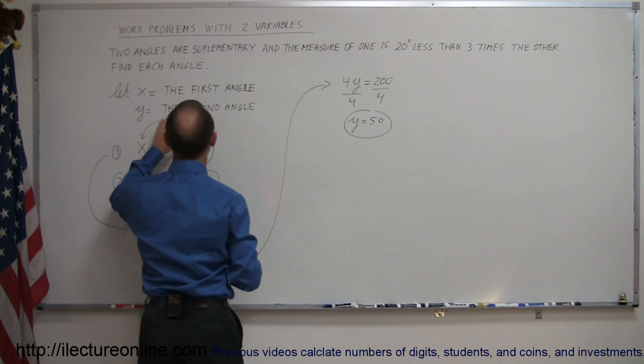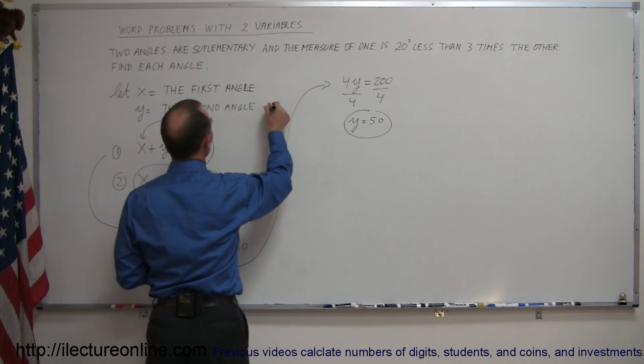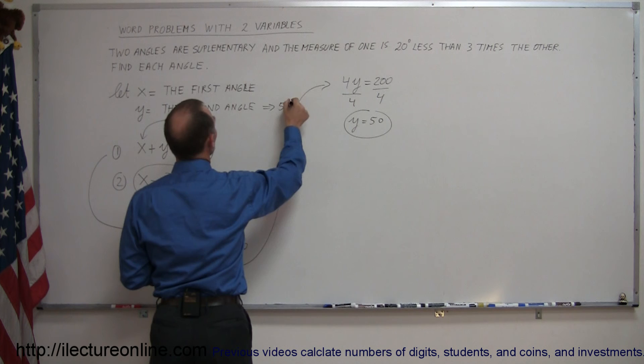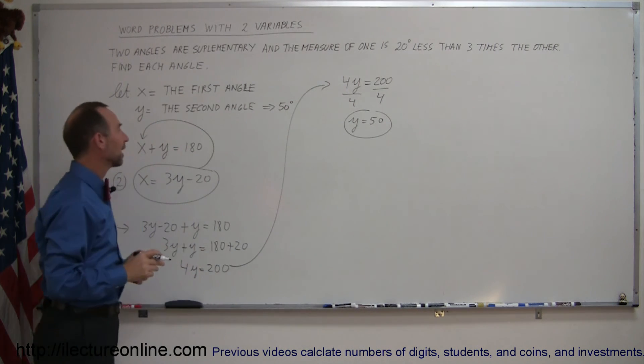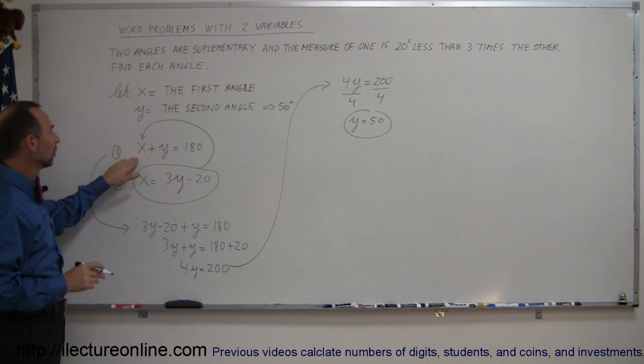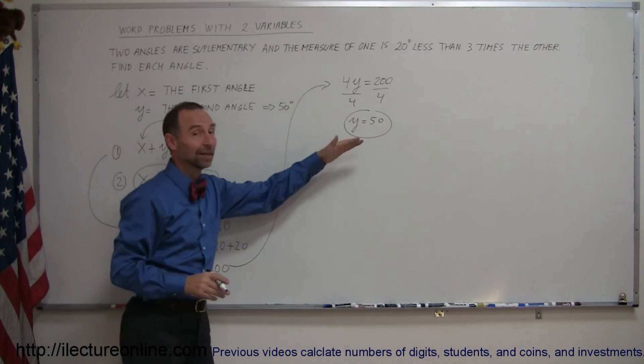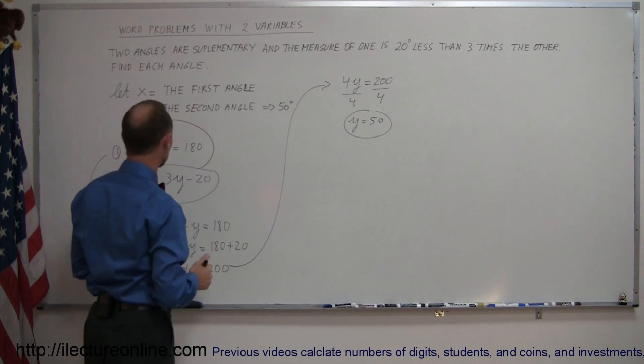So that would mean that one of my angles, I call the second angle, is equal to 50 degrees. So, how do I find the first angle? Well, going back to this equation, since they're supplementary, if they add up to 180 degrees and one of them is 50, that means the other one has to be 130 degrees.